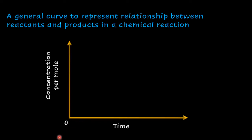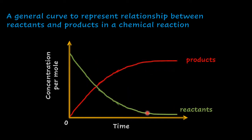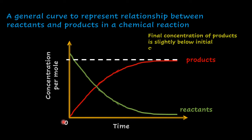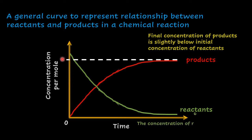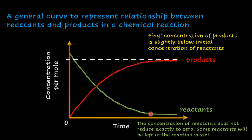Considering the curve, we can say that the concentration of reactants is going to reduce with time, while the concentration of products is going to increase with time. Since not all the reactants are used up, the final concentration of the product is slightly below the initial concentration of reactants, and the concentration of reactants will not go to zero.